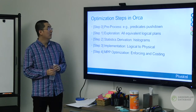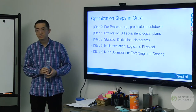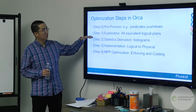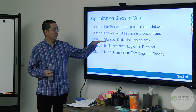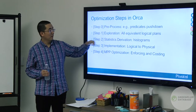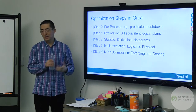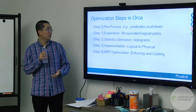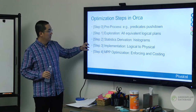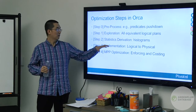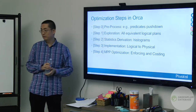Step one is to explore all logically equivalent query plans, dealing with the memo and transformation rules. Step two is to look at the query plans we have and acquire statistics, computing cardinalities for joins, tables, and index scans.